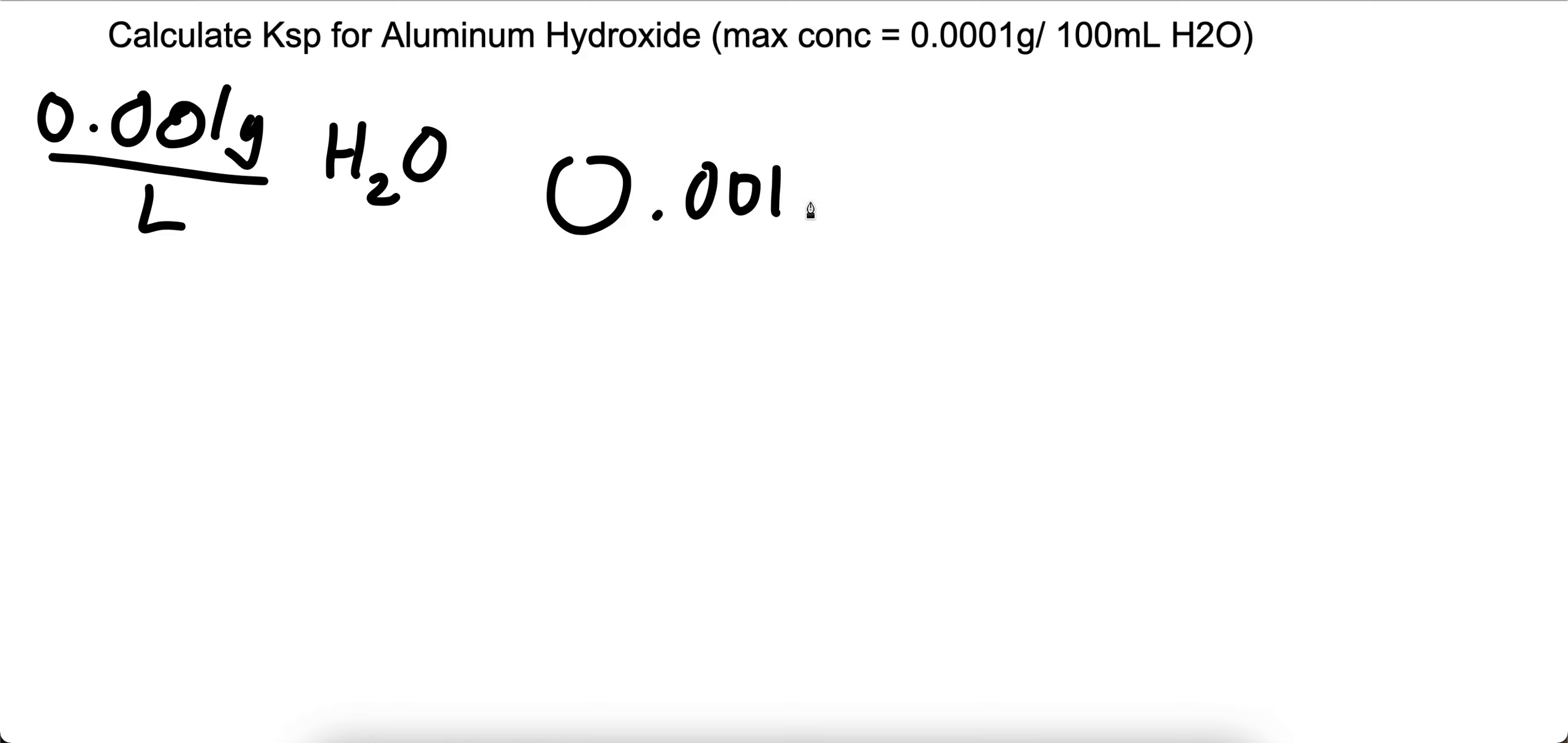Taking this into consideration, we'll multiply by the molar mass. The molar mass of aluminum hydroxide is 78 grams per one mole. This will equal 1.282 times 10 to the negative 5th moles.